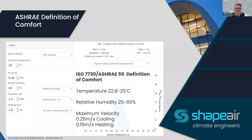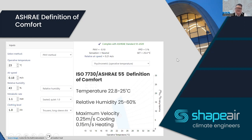The ASHRAE definition of comfort specifies temperature 22.8 to 25°C, relative humidity 25 to 60%, with a maximum velocity of 0.25 m/s in cooling and 0.15 m/s in heating. Remember these values — the airspeed of 0.18 m/s used here and the 0.25 m/s limit will come up again in the presentation.